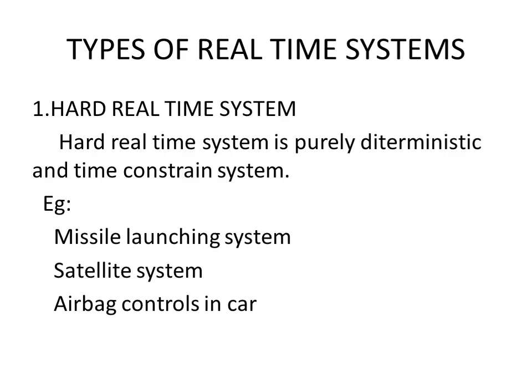There are two types of real-time systems: one is the hard real-time system and the second is the soft real-time system. The hard real-time system is a purely deterministic and time-constrained system — when we give an input the output must be received immediately with very little time delay.